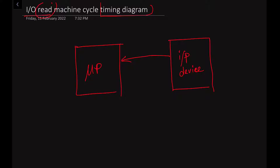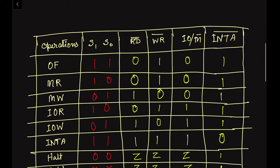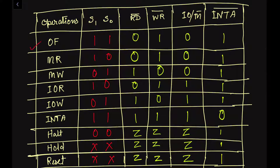When this is a read instruction, something will be read from the input-output device or from the memory unit. In this video we will take one example to understand the input-output machine cycle timing diagram. In our previous videos we have already learned about the opcode fetch machine cycle, memory read machine cycle, and memory write machine cycle. In this video we will cover the input-output read machine cycle.